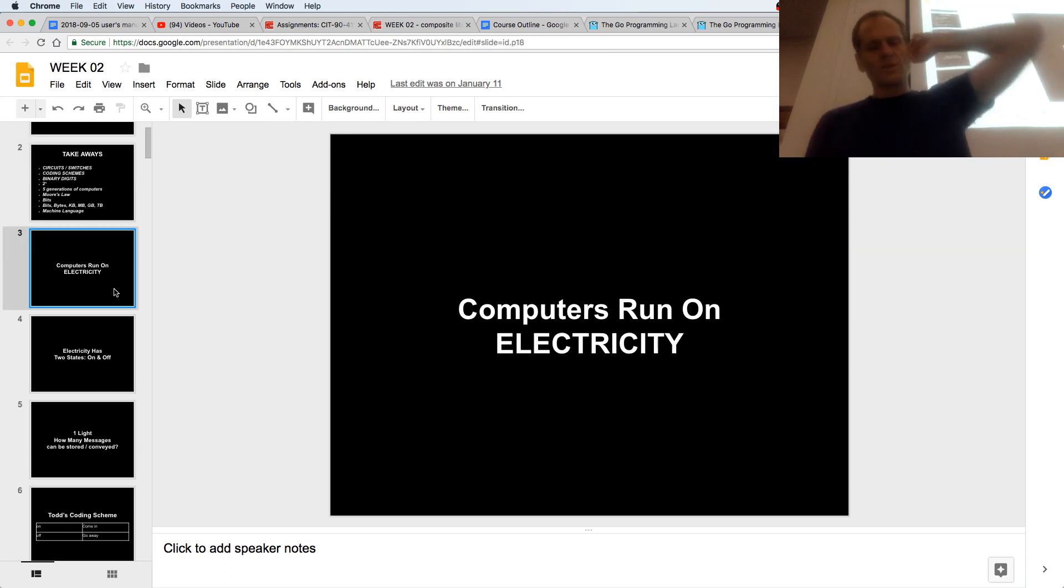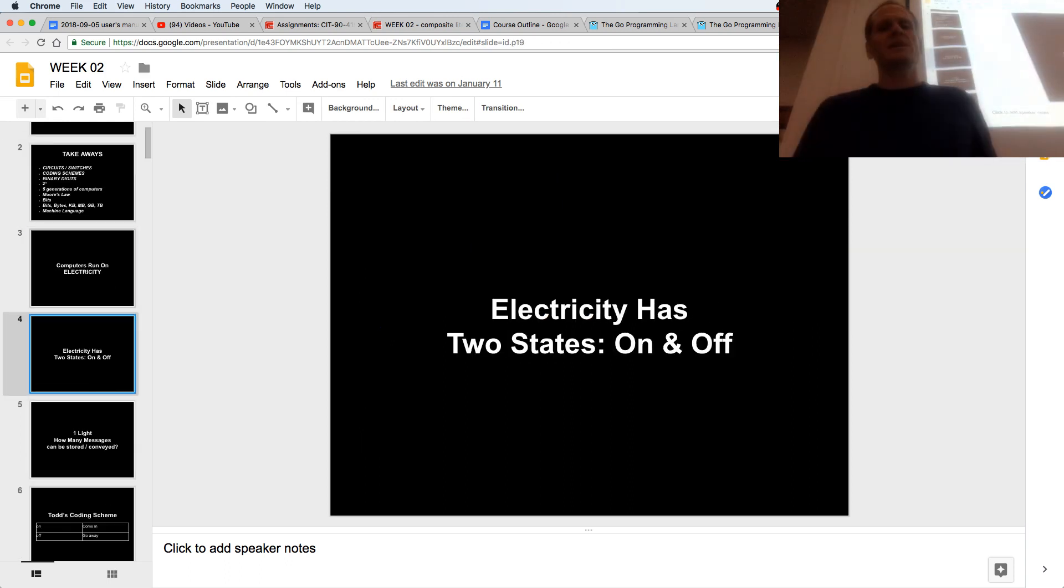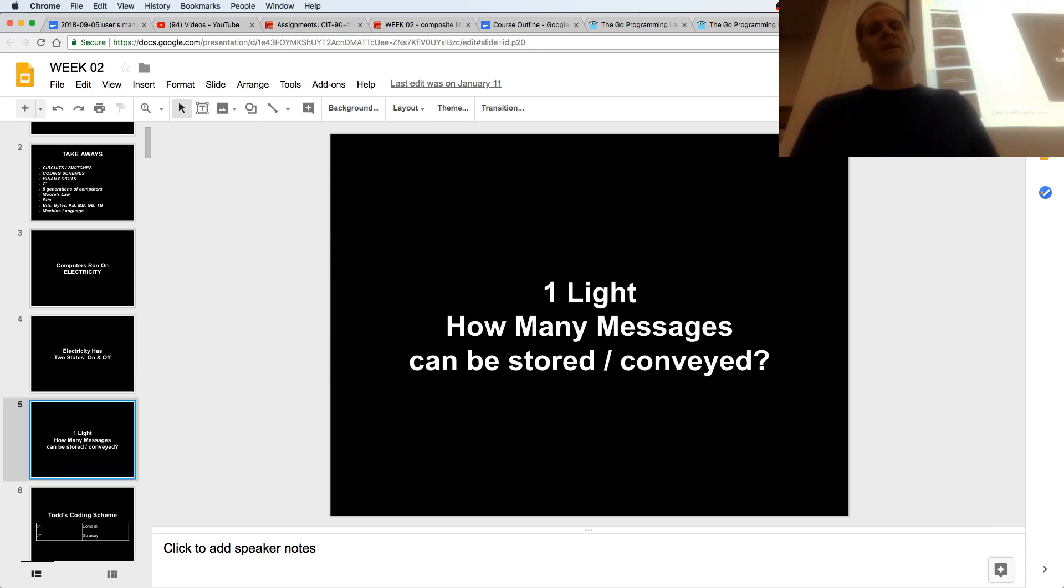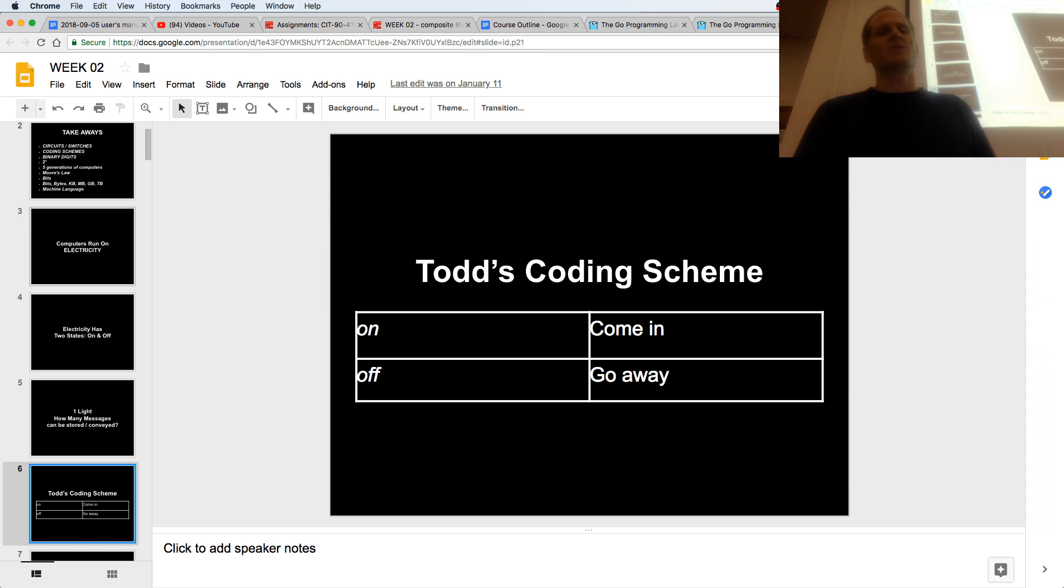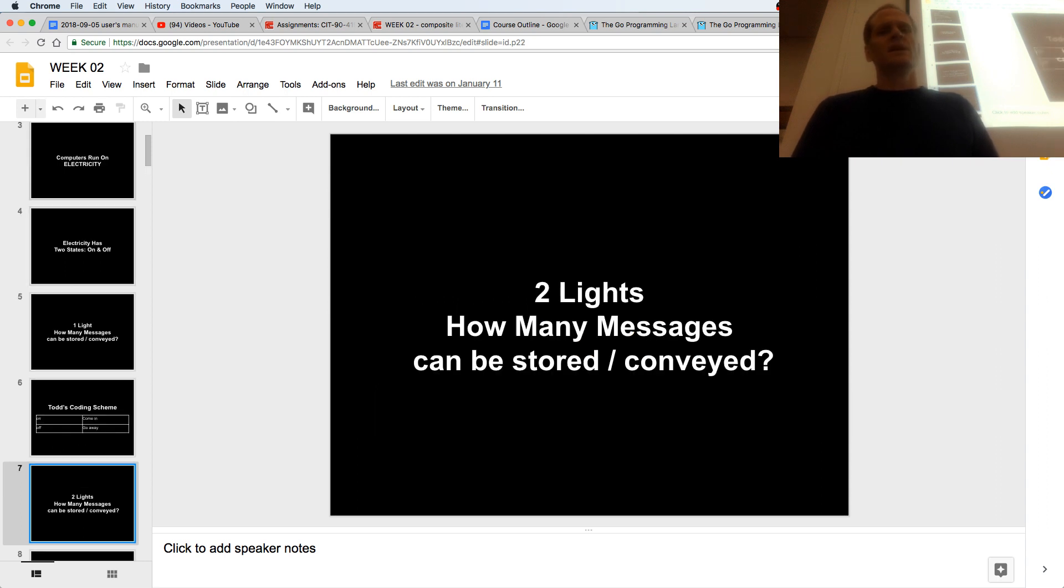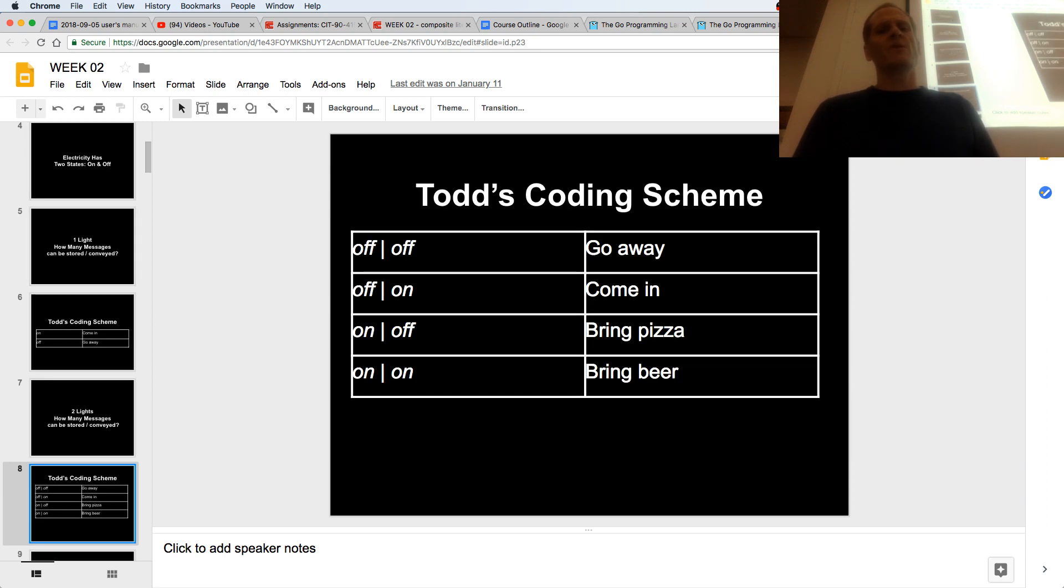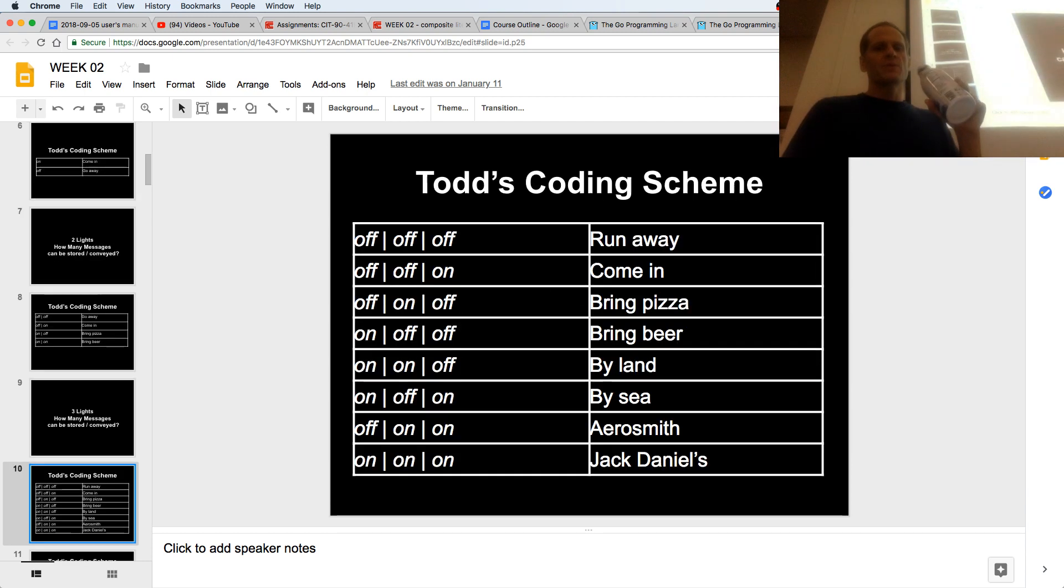So computers run on electricity, electricity has two states on and off. If we have one light, we could store and convey two messages: come trick or treat, go away. If we have two lights, we could store and convey four messages, depending upon the arrangement of the on-off of the circuits, right? You following, Elena? Yeah? If we have three lights, we could store eight.